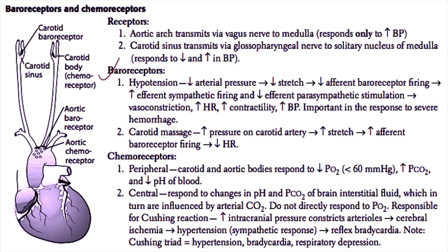Another common situation is carotid massage. In general, in medicine, we use carotid massage to slow down rapid heart rates. When we increase pressure on the carotid artery, we cause stretch of the carotid body baroreceptor. That increased stretch is sensed by the body as an increased blood pressure. By increasing the stretch, we increase the afferent baroreceptor firing back to the CNS. The CNS thinks blood pressure is very high and sends a response to decrease heart rate, slowing AV nodal conduction velocity in an attempt to decrease blood pressure.